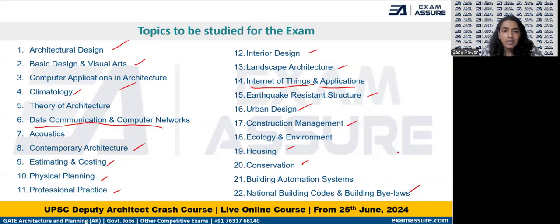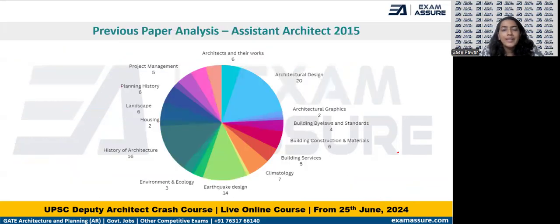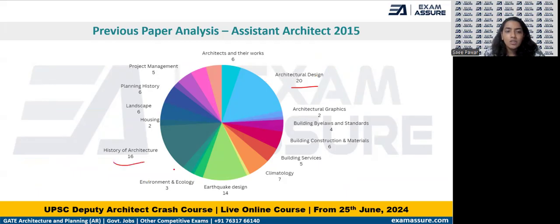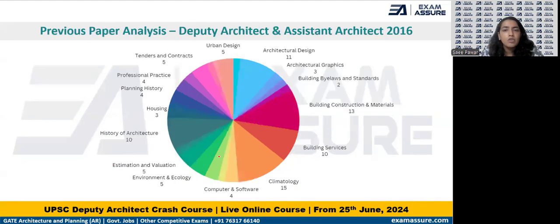To have a glimpse, let us quickly look at the analysis of the previous year papers. In the 2015 paper of the UPSC Assistant Architect exam, the majority of questions were from architectural design topics, then history of architecture had more weightage, and overall, climatology, earthquake design, services, construction, and planning/project management were given more or less equal weightage.